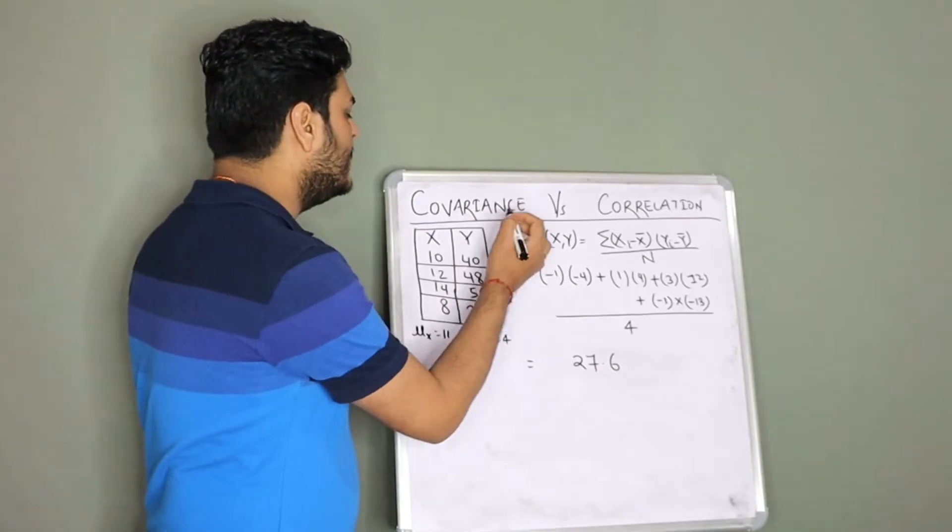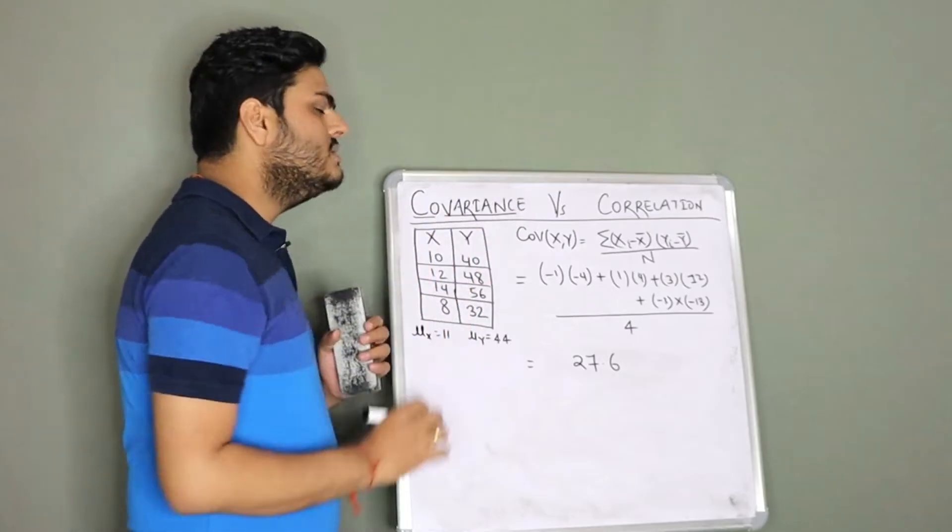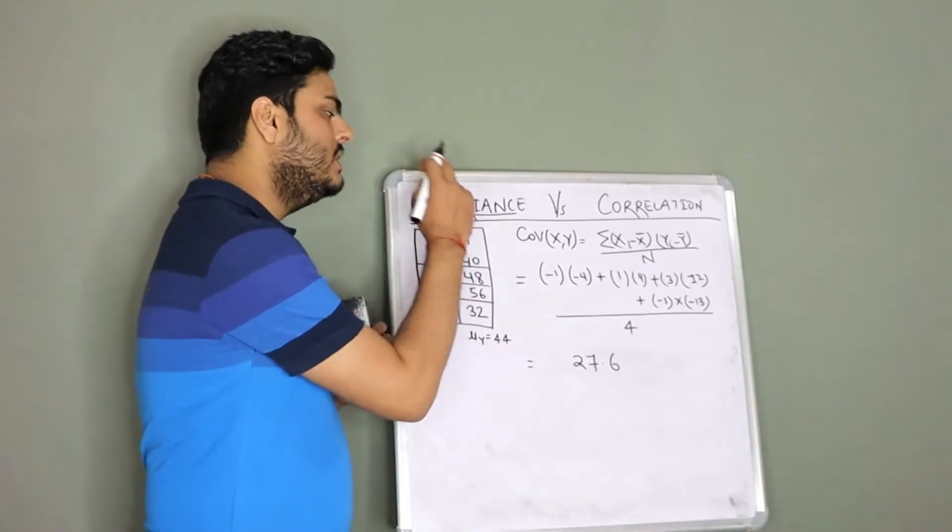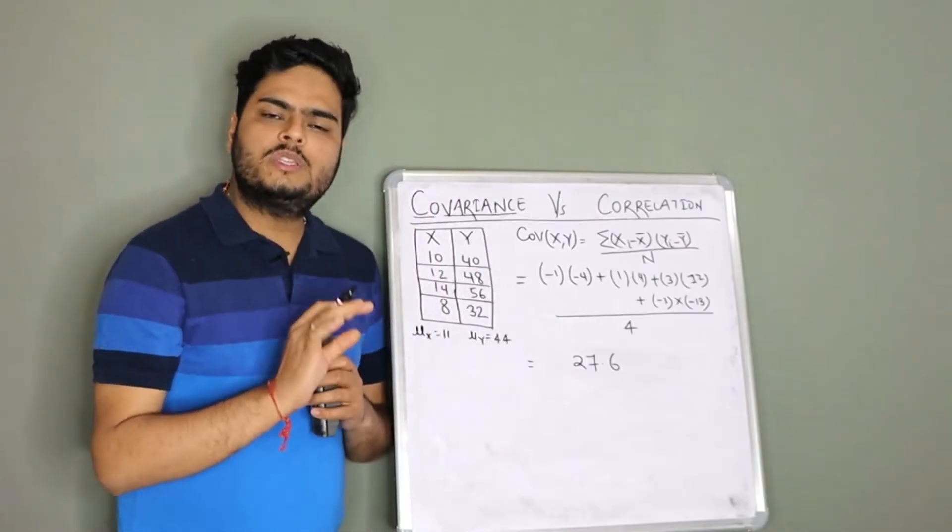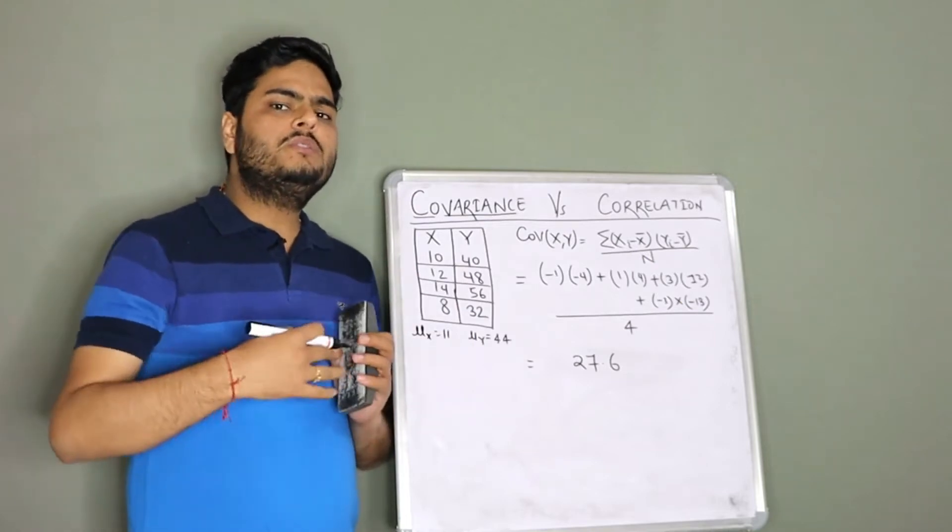Let us start. First, we have to understand what this word is made of. Covariance is co-variance. Co means together. Variance you know is a statistical term. Now, let me ask you a simple question. Forget all these calculations for now. What is variance?